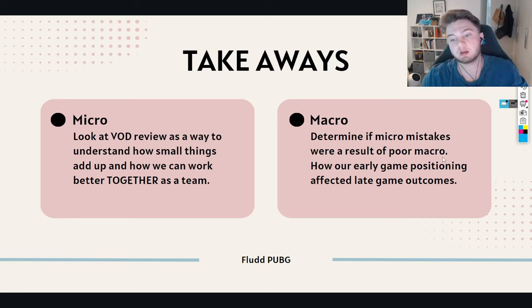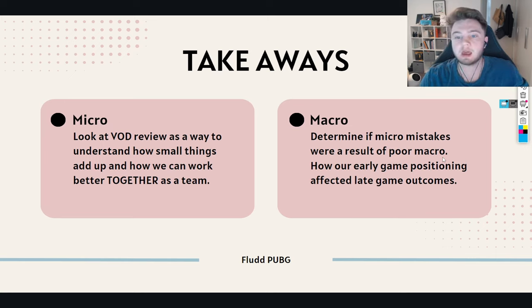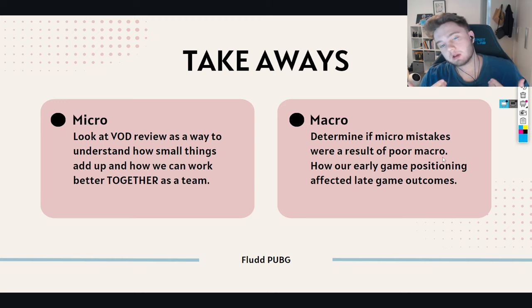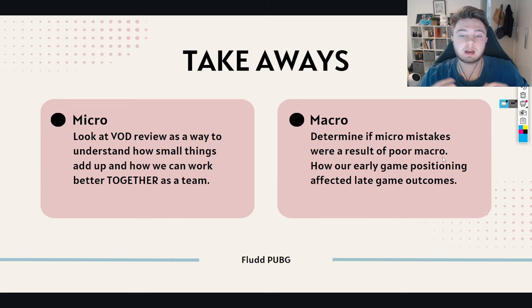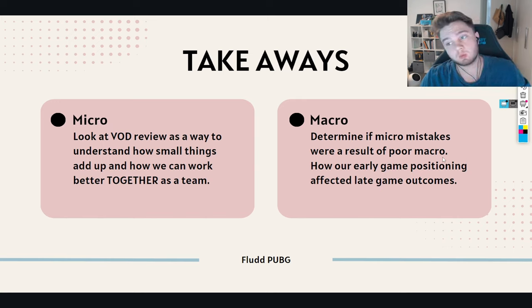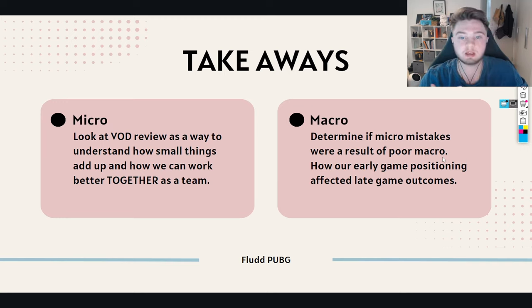We don't want to harp on micro mistakes — it's not the main focus because they're probably not going to happen again. What we should be taking on and remembering is our macro mistakes, and determining if micro mistakes were a result of poor macro, because everything links together. Bad macro will lead to poor micro most of the time. Think about our early game positioning and how it affected our late game outcomes. At VOD review, we really need to think about micro and macro and how they work together — not just focusing on outcomes and why we died, because breaking it down into the smaller things is how you'll actually learn more.